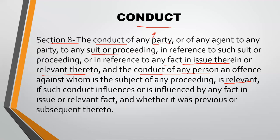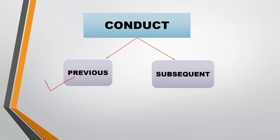What is Conduct? Any person's physical act — what he does and what he does not do — is called Conduct. Omission also comes under Conduct. In section 8, its relevance has been given. To prove Conduct, it must influence a fact in issue or a relevant fact, then Conduct will be relevant. Conduct can be previous as well as subsequent. Previous conduct refers to conduct before the principal act. For example, if a person steals property and then sells it, those are subsequent conducts. Under section 8, both previous and subsequent conducts are relevant.